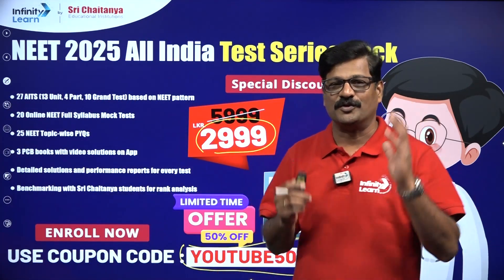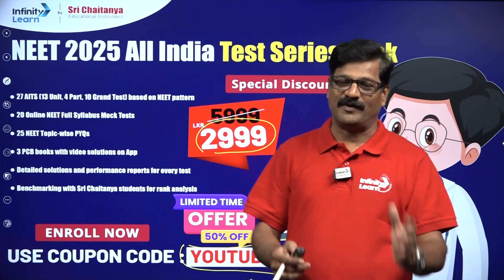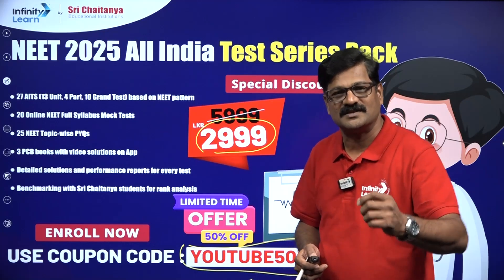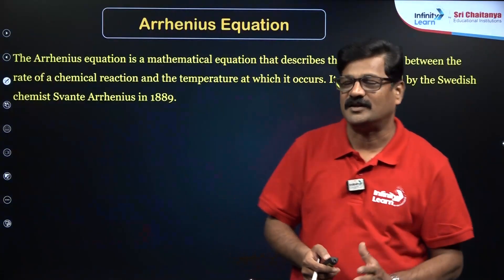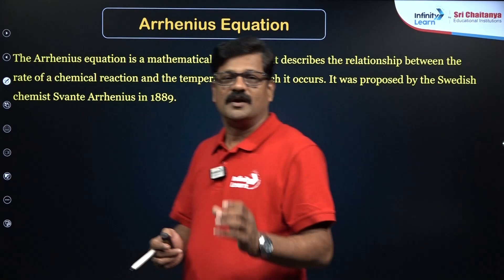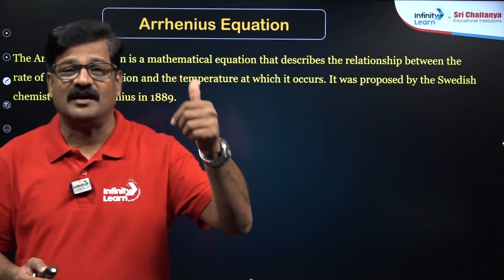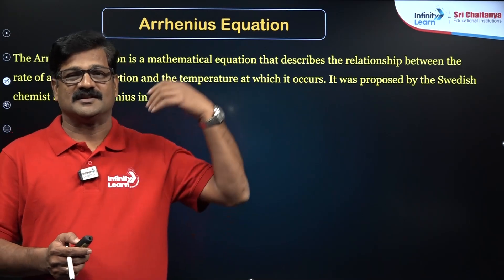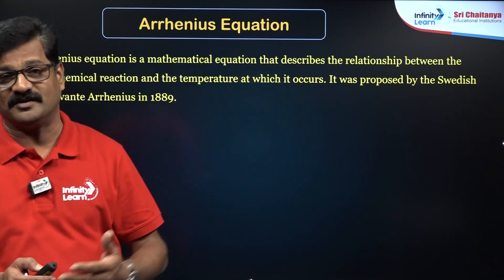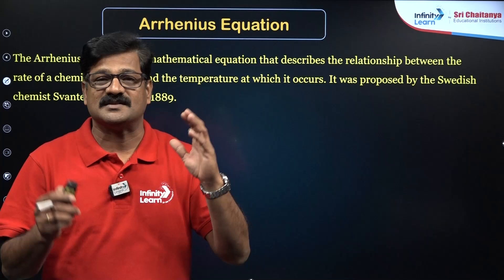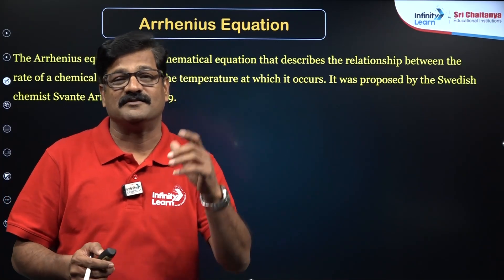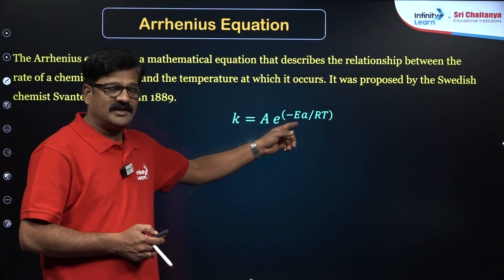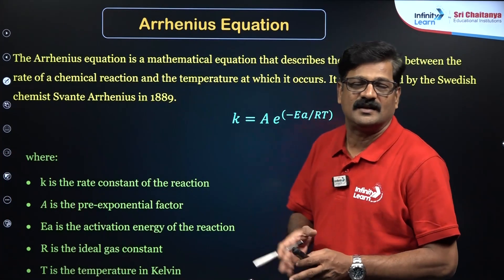So we are starting Arrhenius equation. Arrhenius equation is a very important equation and this equation gives you temperature dependence on the rate constant. Some reactions are slow at low temperature, the same reaction may be fast at high temperature. Why the temperature increases the rate of reaction increases is given by Arrhenius: k = A e^(-Ea/RT).